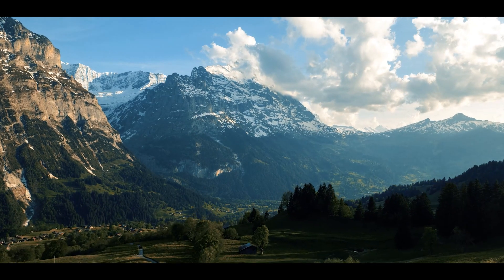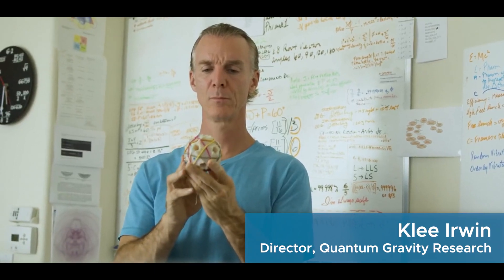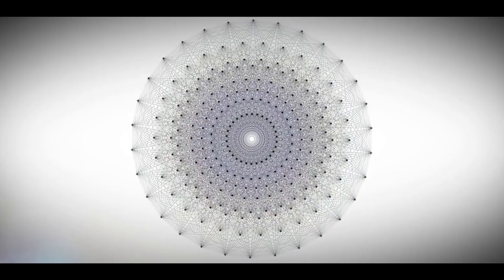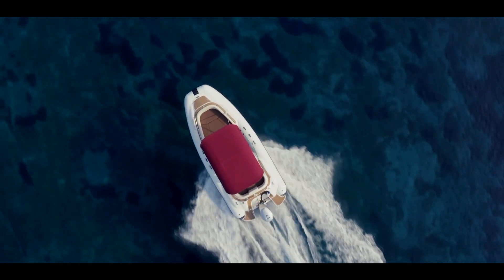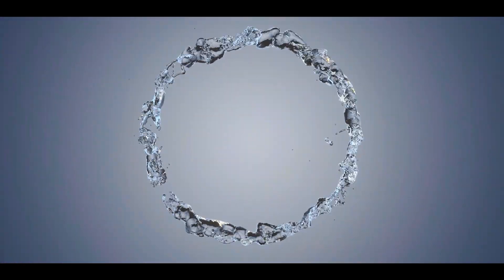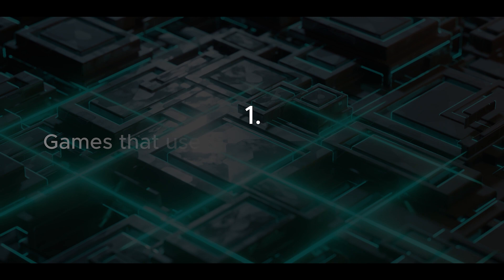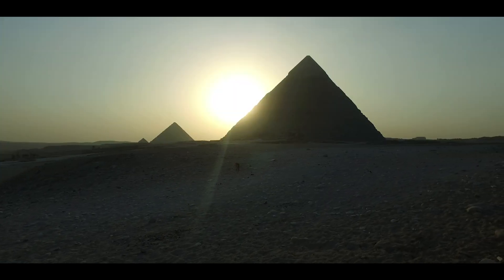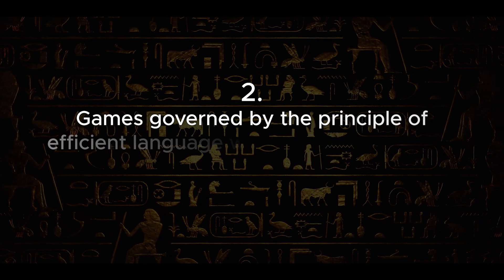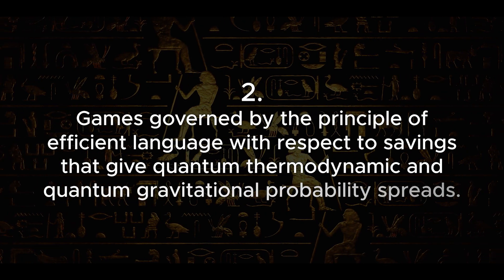With all of that covered, let's talk about the approaches to deep learning as it relates to what we're intending to do here. On the game board of E8 and its 3D representation as the Fibonacci ICASA grid or the FIG, we have an infinity of possible simple programs with the following restrictions: games that use savings based on empire mathematical structure, governed by the principle of efficient language with respect to these savings that give quantum thermodynamic and quantum gravitational probability spreads.